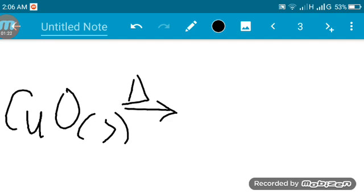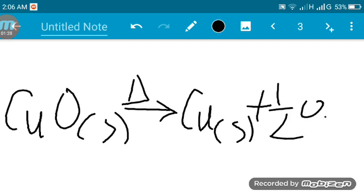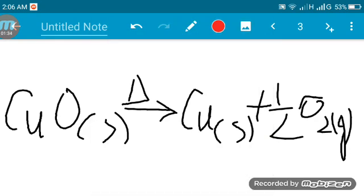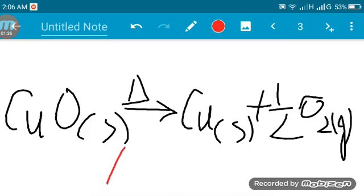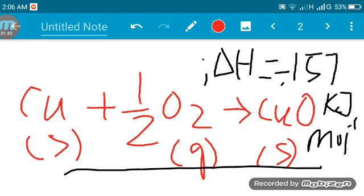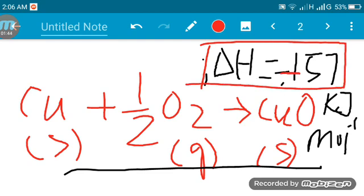At the top, the reactants are Cu solid plus half O2 gas. We have to do the calculation. The product is CuO solid. The enthalpy change for this reaction is minus 157.